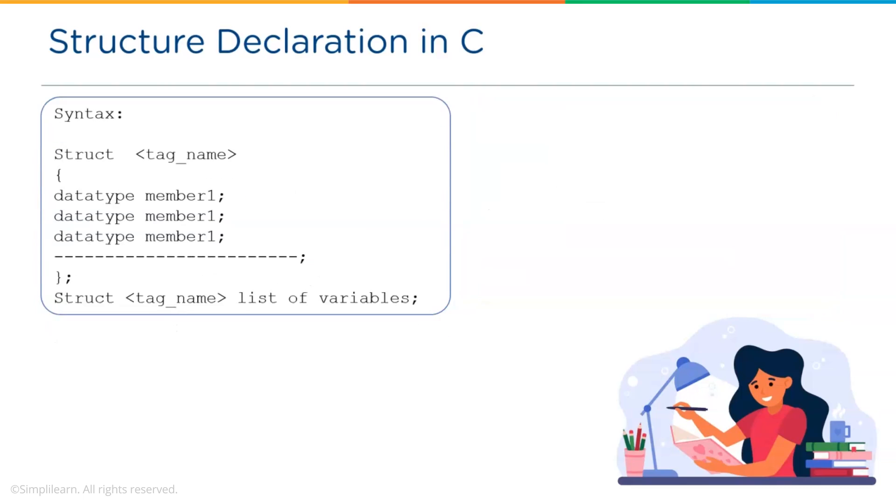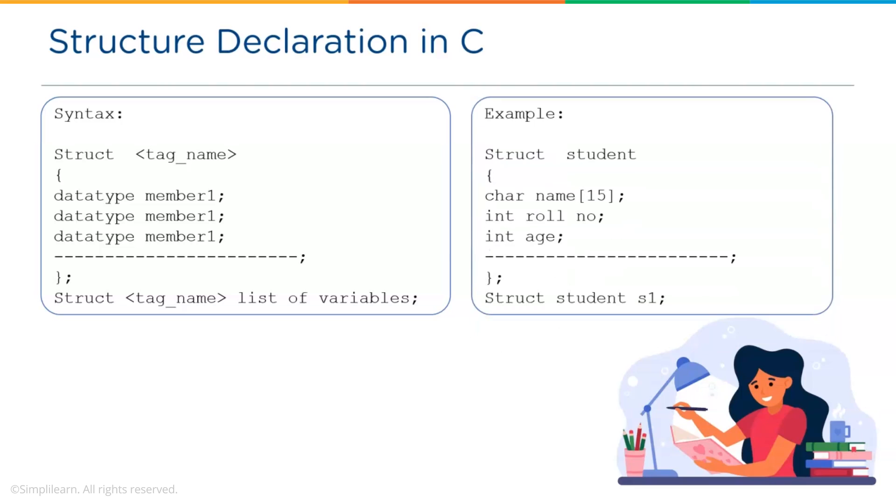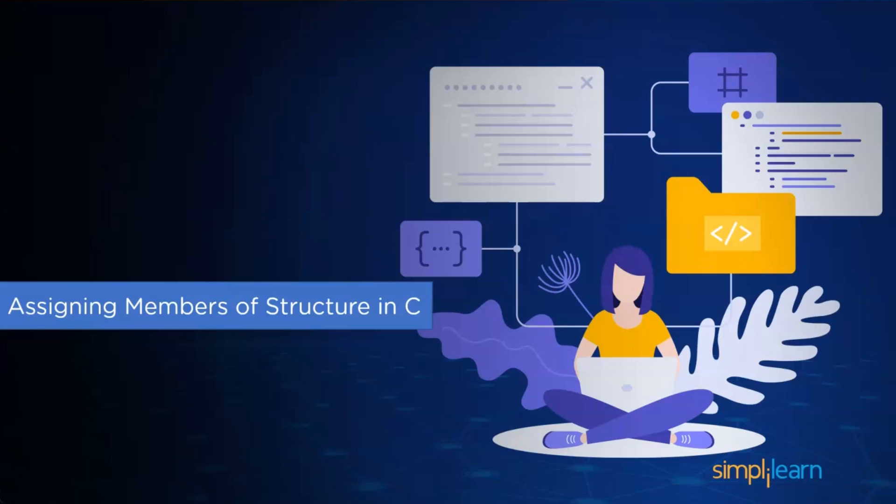Another way of structure declaration is, we can declare structure variable outside the curly brackets by using struct keyword followed by a tag name and then declare variable list. For example, struct keyword, then student tag name and s1 as a variable name. In structures in C programming, we cannot assign values during the definition of a structure. It indicates the wrong way to the declaration.